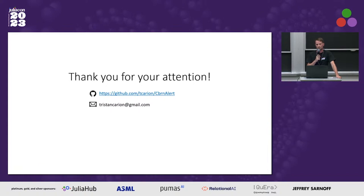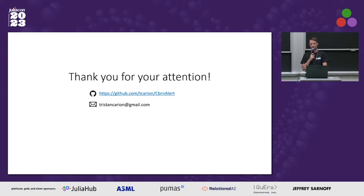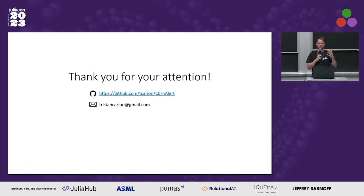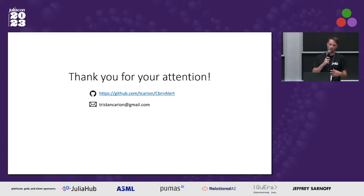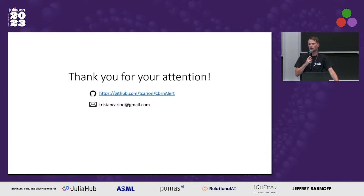Could you use Sentinel-5P data from the Copernicus program for these dispersion models? For Flexpart, it only works with ECMWF data and also with WRF data from the American institute. It doesn't work with any type of weather data because a lot of fields are needed for the dispersion model to run. But I intend to implement other dispersion models — simpler ones called Gaussian dispersion models — and maybe with those I could use any type of weather data.